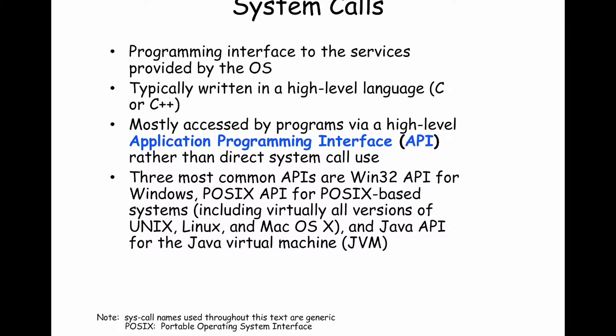There are lots of APIs available for different platforms. For Windows, the main interface is called Win32. You might think — isn't Windows 64-bit? Yes, but Win32 is the historical name for the underlying APIs. When you use libraries available in the Windows Software Development Kit (SDK), if you look at the source code for those SDK calls, they will ultimately boil down to Win32 API calls.